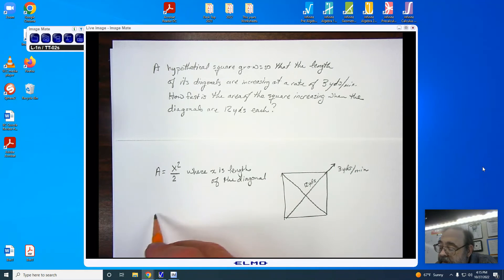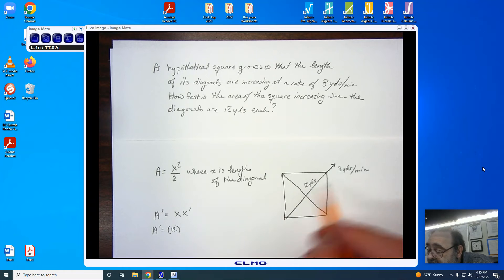All righty, we're going to put it into the formula. A prime equals x, x prime. Therefore, if x is the length, that's got to be 12, and 3 yards per minute. Let me put my limits in.